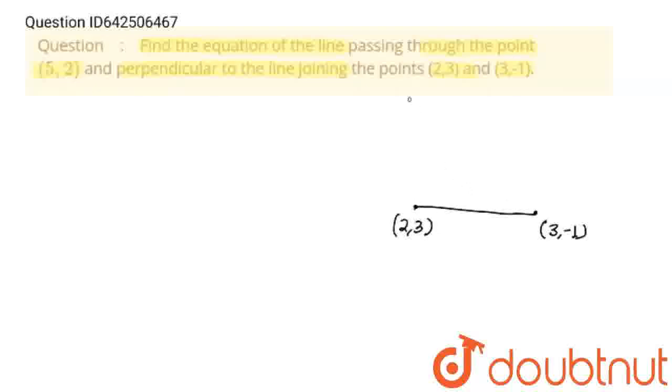So, equation of the line passing through the point (5,2) and perpendicular to the line joining these two points. So this is our line passing through (5,2). We know that if this slope is m1 and slope of this line is m2, then the product of both m1 and m2 will be minus 1.